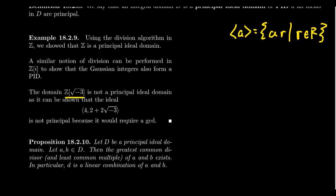If we look at Z adjoined the square root of negative 3, this was an important example of an integral domain that was not a unique factorization domain. We showed it wasn't a UFD because it didn't have unique GCDs or LCMs — properties a UFD must have. It is also true that this integral domain Z[√-3] is not a principal ideal domain. The issue comes down to GCDs: if you take the ideal generated by 4 and 2 + 2√-3, if it were generated by a single element, that generator would have to be the GCD of those two elements, which we showed do not have a GCD.